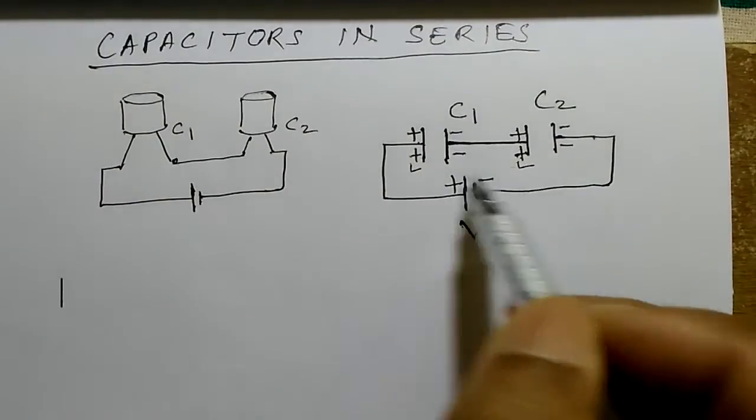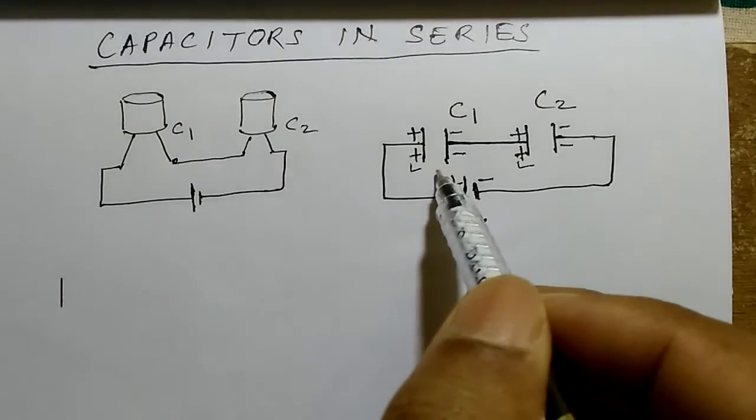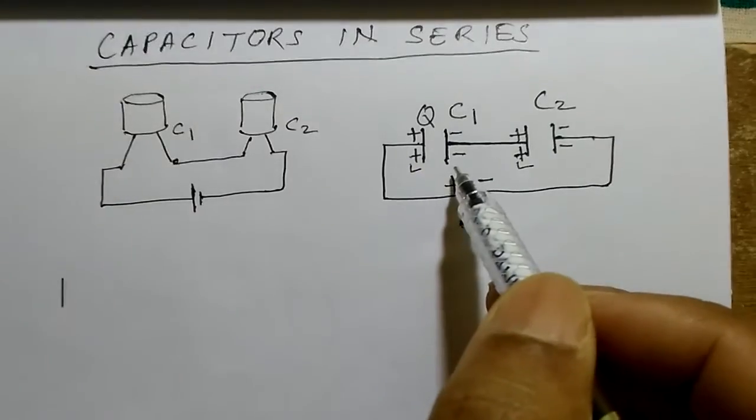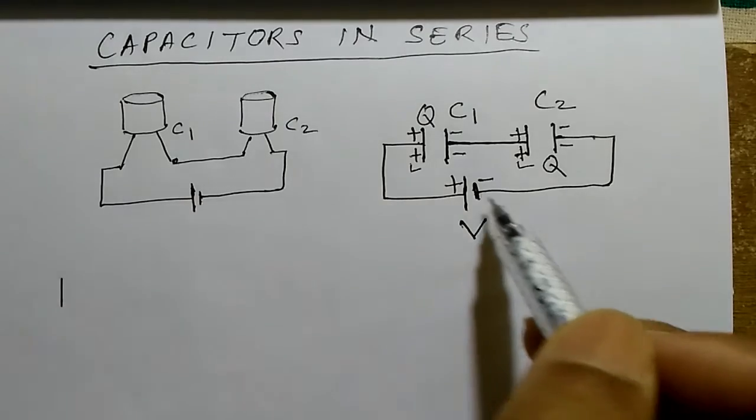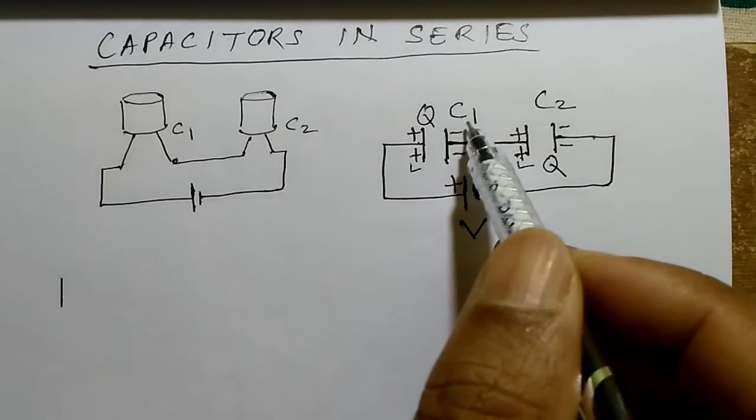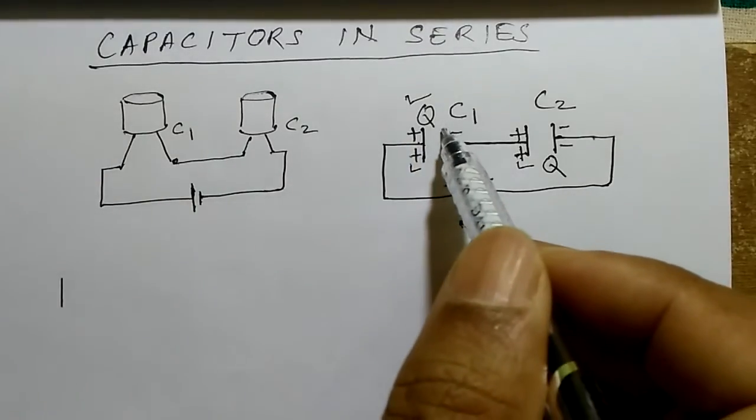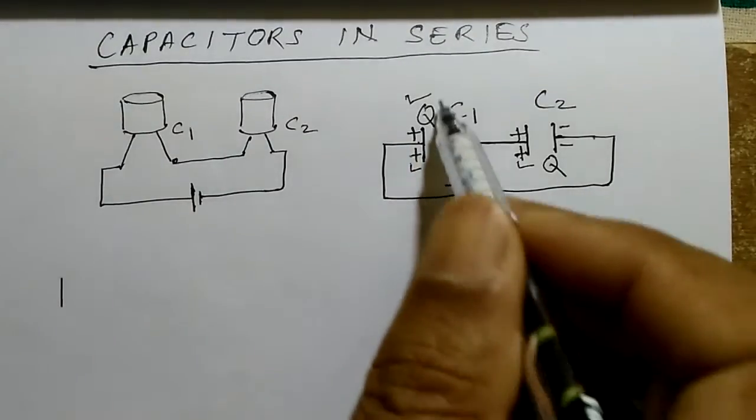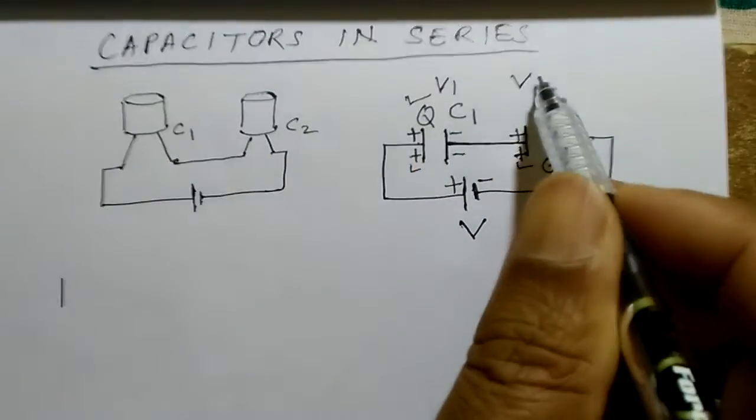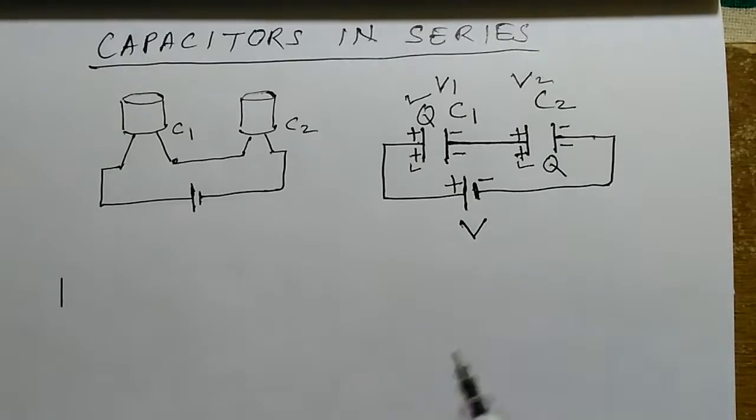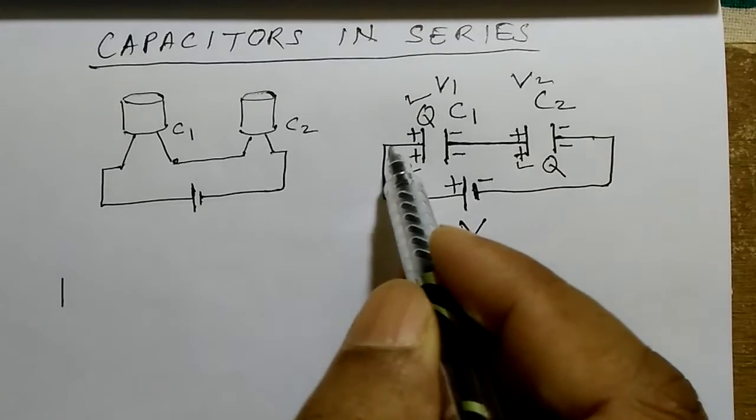So in this case, the amount of charge stored on this capacitor is Q, and the same charge is stored on this capacitor, Q. But the capacities are C1 and C2. It means the charge is stored but the potentials will be different. V1 is the potential here and V2 is the potential here. So this potential difference appears as a drop here and then it is here, that is, V is equal to V1 plus V2.